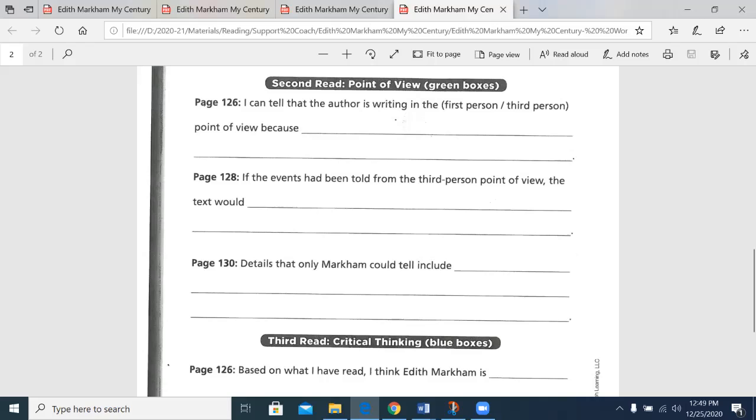These are the green box questions, and the first one on page 126 is: the point of view of the selection, first person or third person, how do you know? And the answer is that it is first person, because she uses pronouns I and my to tell about events that happened to her. Third person would be she and her and they or them.